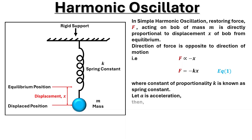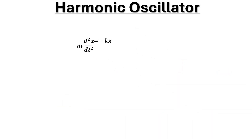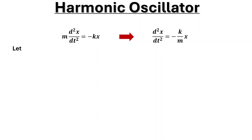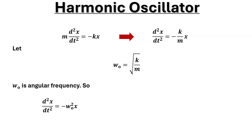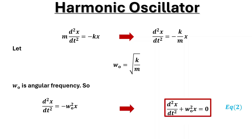Let a be acceleration. Then the force equation can be written as F = -kx. This equation can be modified further. Let ω₀ equal the square root of k over m, where ω₀ is angular frequency. So our differential equation is written as ẍ + ω₀²x = 0, as given in equation 2. This is the equation of the simple harmonic oscillator.